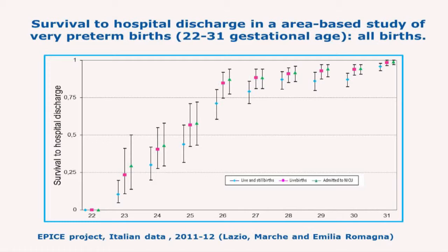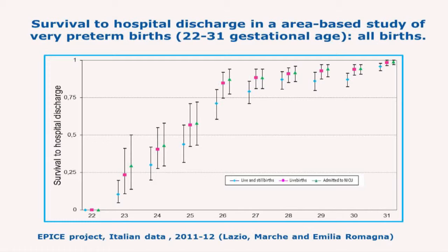For instance, this graph shows the results of survival to hospital discharge of very preterm babies — in this case, gestational age 22 to 31 weeks — recruited in an area of Italy covering three regions: Lazio, Marche, and Emilia-Romagna. The study was population-based: all births occurring within one year in those geographical areas were included, both stillbirths and live births. We can see at a glance that survival improves with increasing gestational age, and the improvement is quite steep up to 26 weeks, where every week matters, while it flattens afterwards.